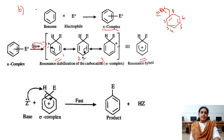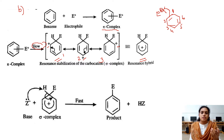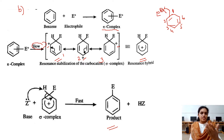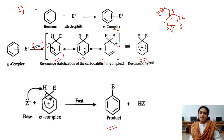In the third step, since E+ and Z- were produced initially and only E+ was used, the remaining Z- will abstract one hydrogen from the benzene ring to give the desired product.